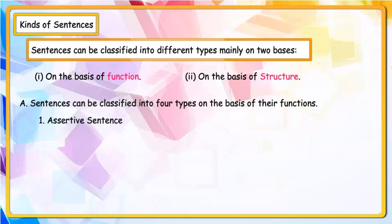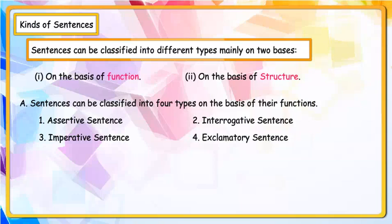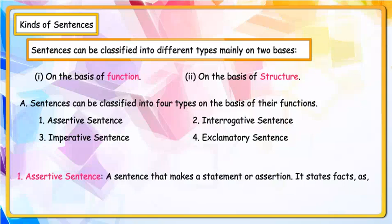Assertive Sentence, Interrogative Sentence, Imperative Sentence, Exclamatory Sentence. Assertive Sentence: A sentence that makes a statement or assertion. It states fact. For example: She is a very intelligent woman. He did not work hard.